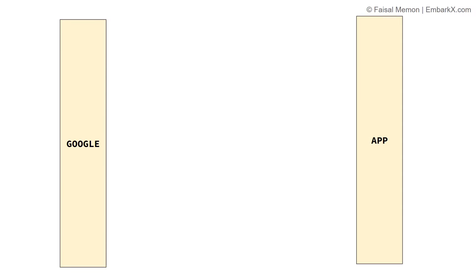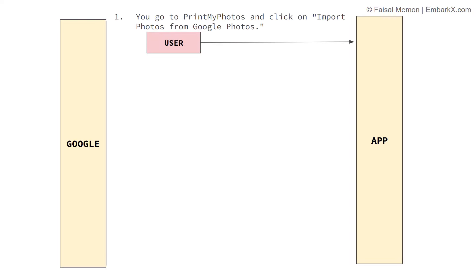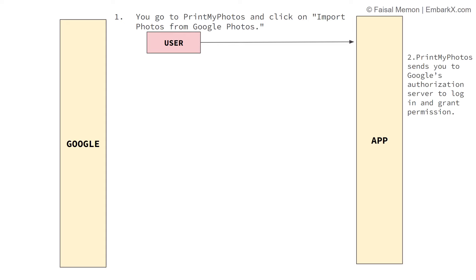Now let's walk through the OAuth flow step by step using the Print My Photos example. You go to the application and click something like 'Import photos from Google Photos,' initiating the flow to connect the third-party application to your Google account. The second step is that Print My Photos sends you to Google's authorization server to log in and grant permission.